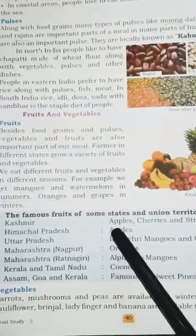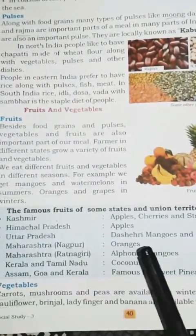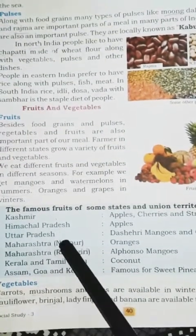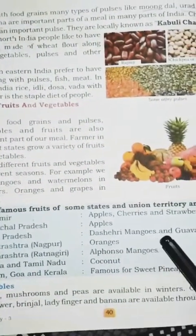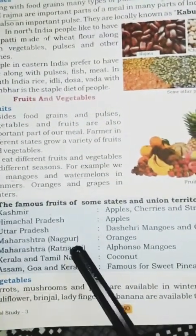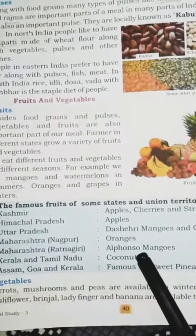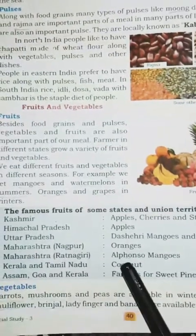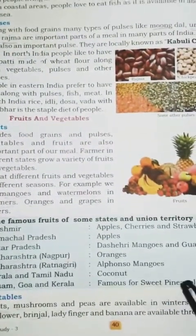The famous fruits of some states and union territories: Kashmir is famous for apples, cherries, and strawberries. Himachal Pradesh is famous for apples. Uttar Pradesh is famous for the Seri mangoes and guava. Maharashtra's Nagpur is famous for oranges, and Maharashtra's Ratnagiri is famous for Alphonso mangoes. Kerala and Tamil Nadu are famous for coconut. Assam, Goa, and Kerala are famous for sweet pineapples.